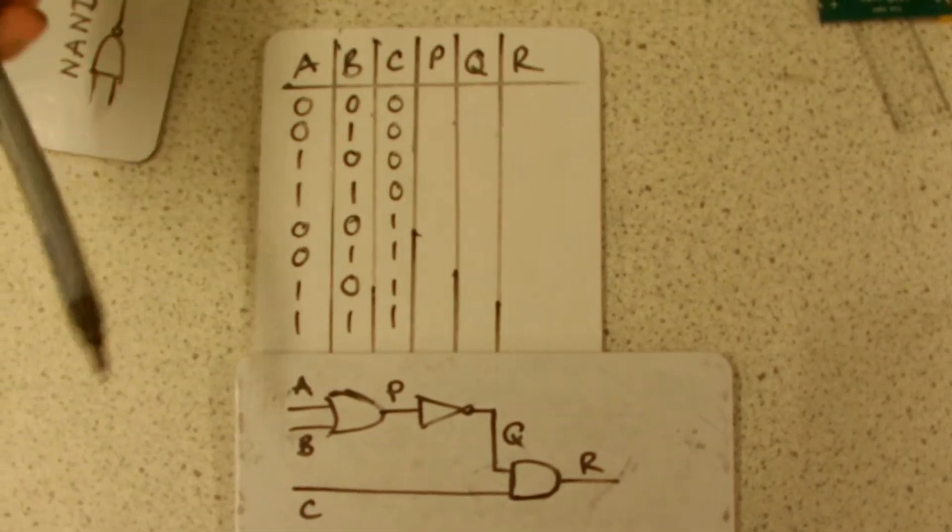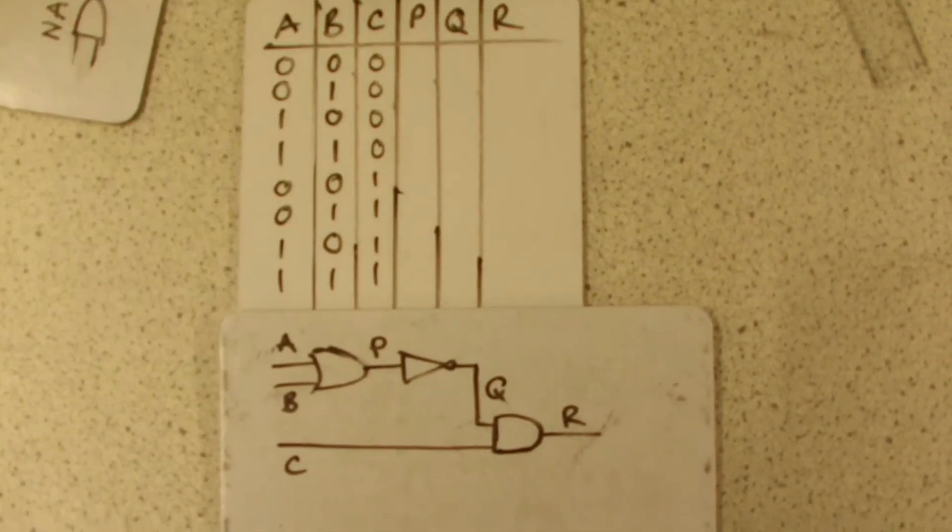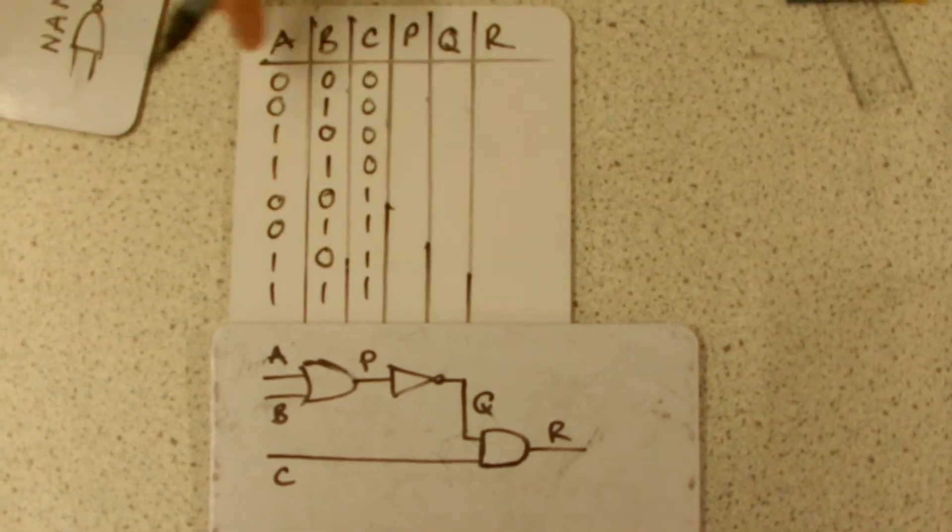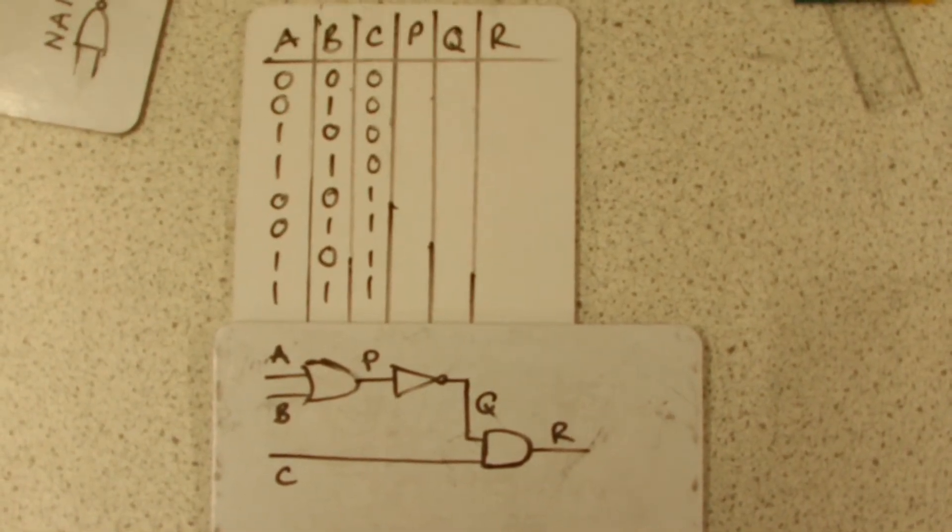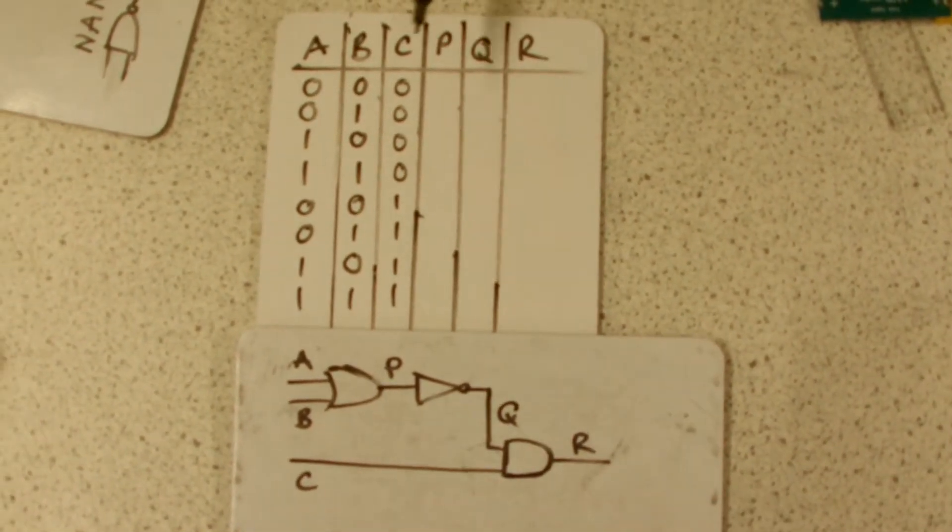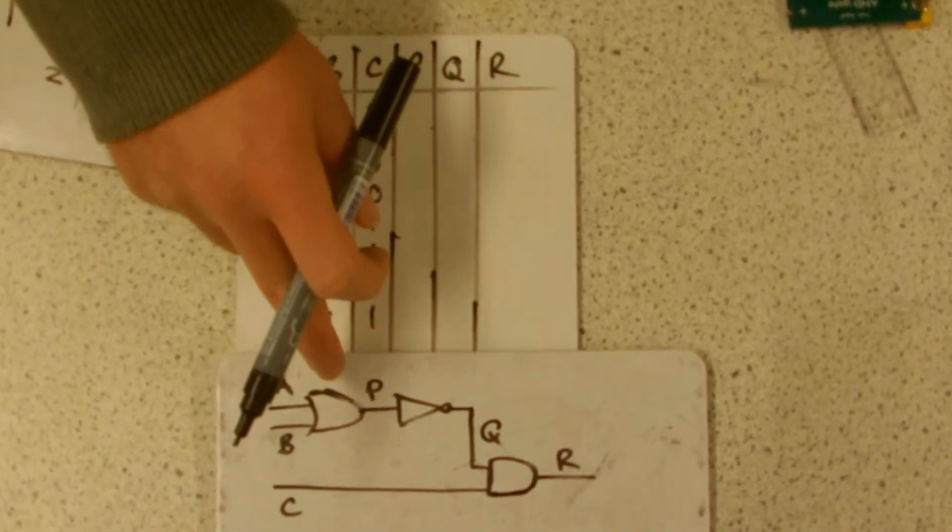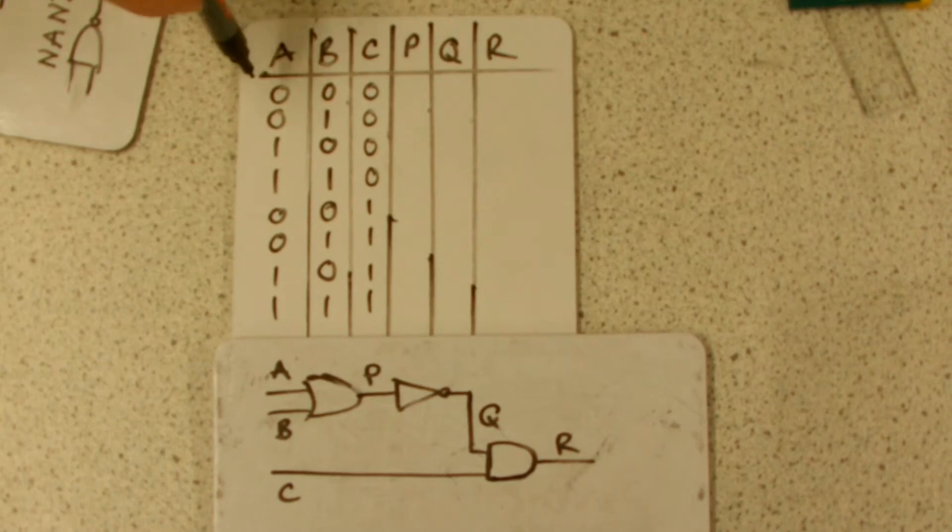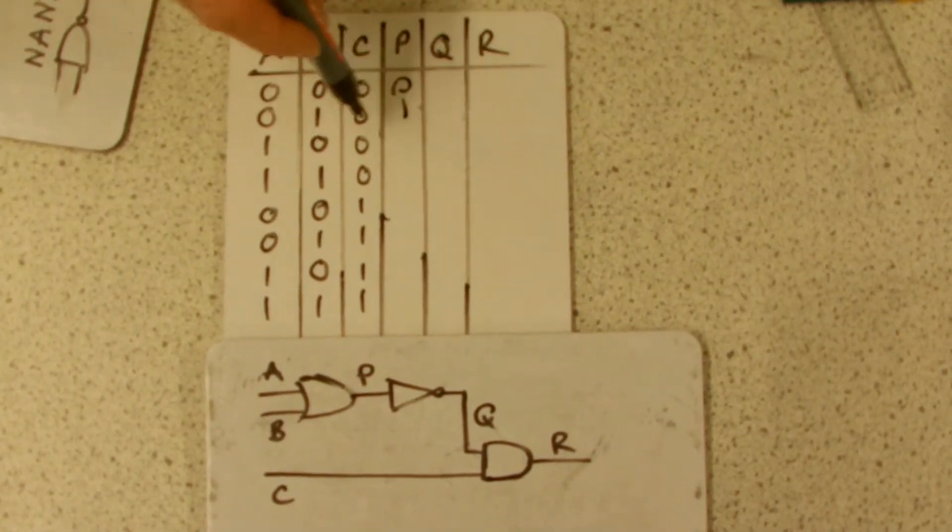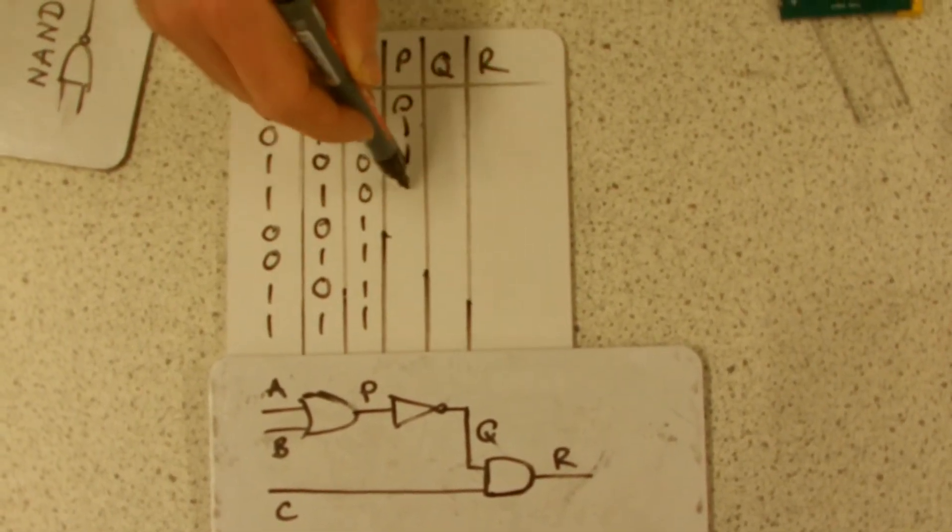So this is a slightly more complex system of logic gates, and you would be given in an exam something like this half-filled table where you have to work out all of the outputs. So let's just go through. So P depends on A or B. That's an OR gate, wasn't it? So are either of them on? No. Are either of them on? Yes. Yes. Yes. So that's the first set of P.